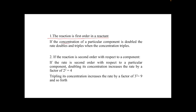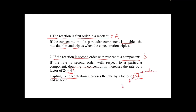If a reaction is first order in a reactant, doubling the concentration of that reactant doubles the rate, and tripling it triples the rate. For a second-order reaction with respect to a component, doubling the concentration increases the rate by a factor of 4, and tripling the concentration increases the rate by a factor of 9 — that is 3 raised to the power 2, where 2 is the order.